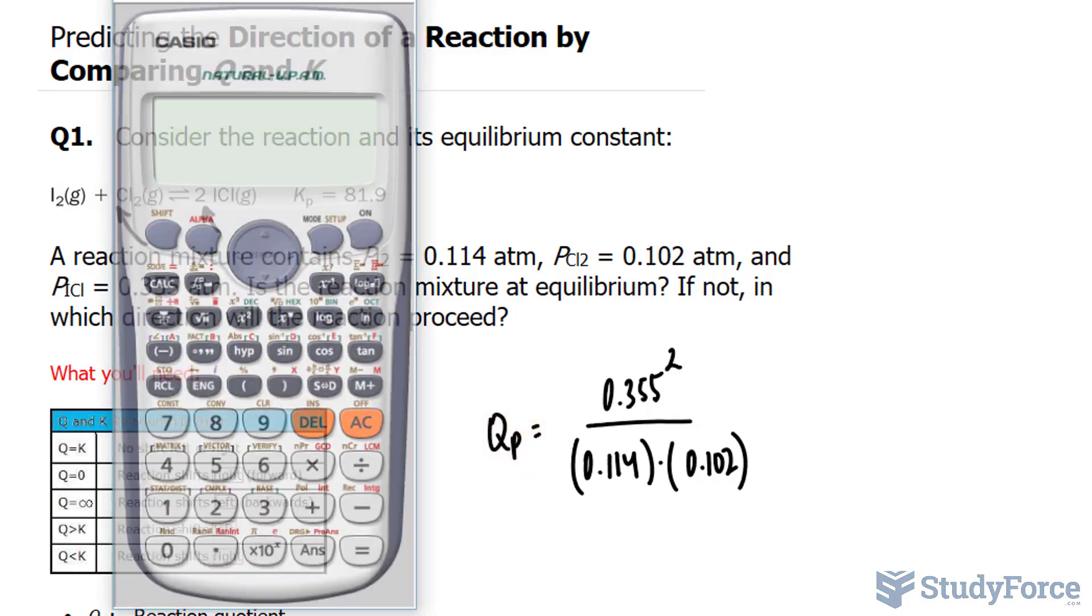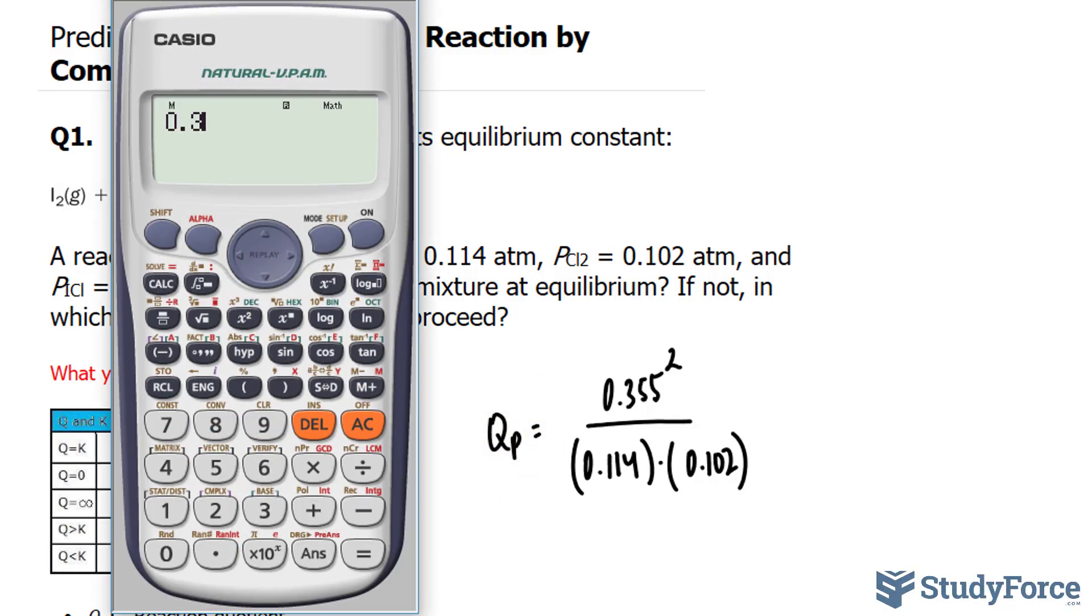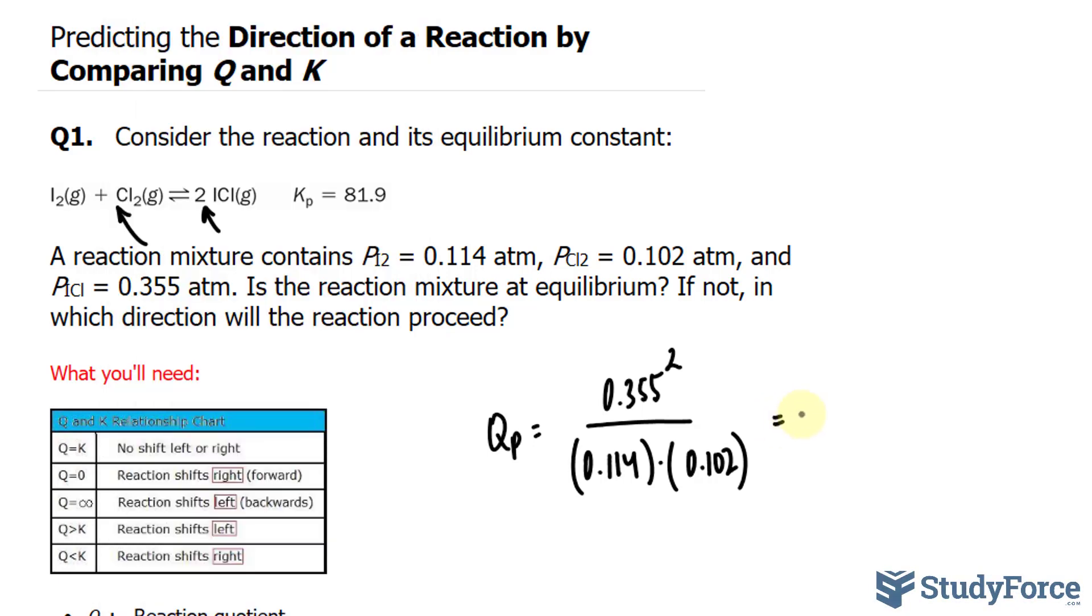Using my calculator, 0.355 raised to the power of 2, divided by the products of the denominator. So 0.114 times 0.102. Our answer should have three significant figures, giving us 10.8.